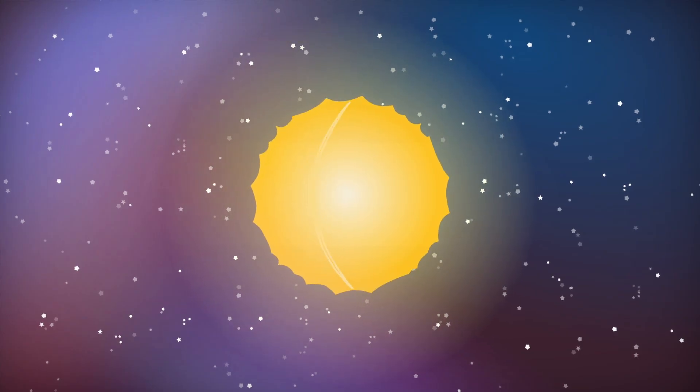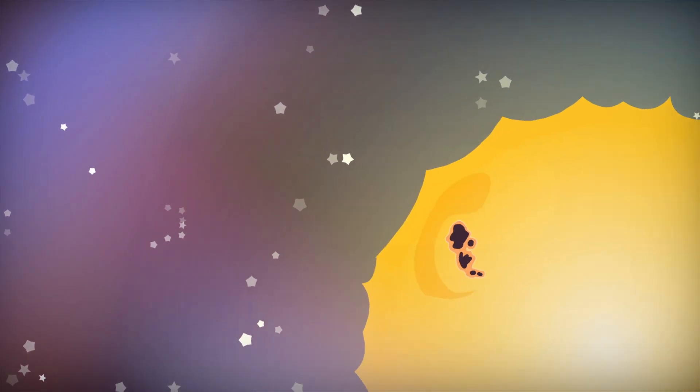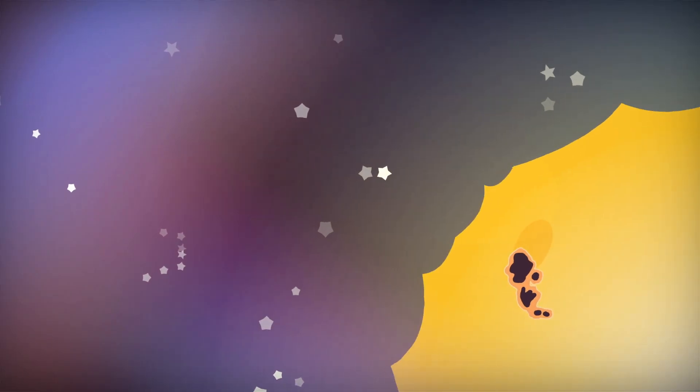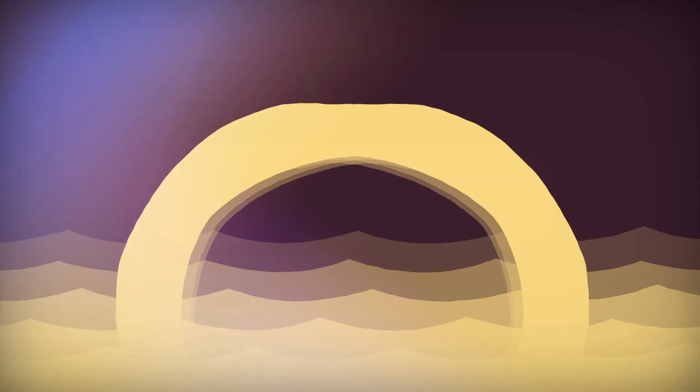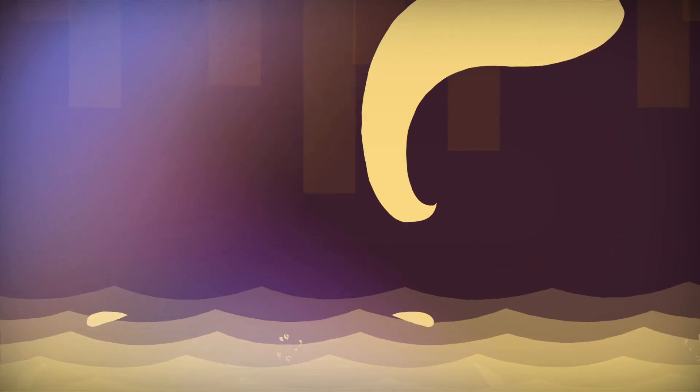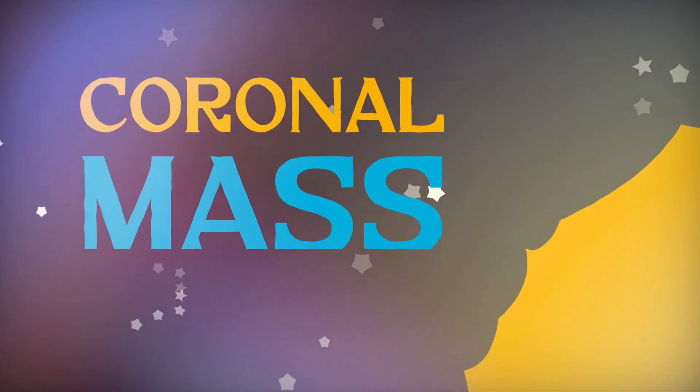As this plasma slowly swirls, it creates areas of intense magnetic activity called sunspots. The magnetic fields that form near these regions often become twisted and strained. And when they're stretched too far, they snap into simpler configurations, releasing energy that launches plasma from the sun's surface. These explosions are known as coronal mass ejections.